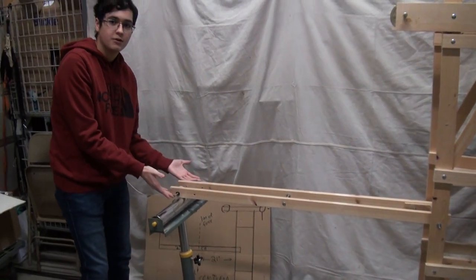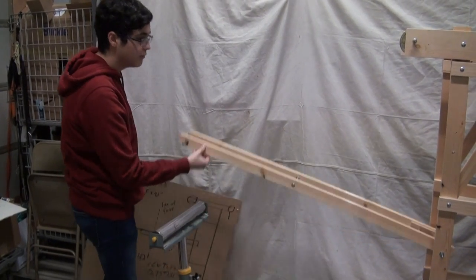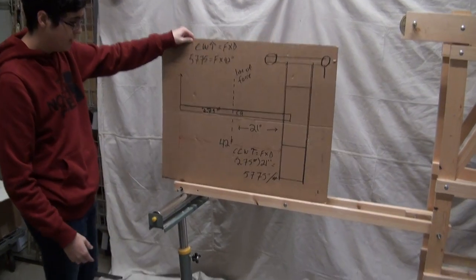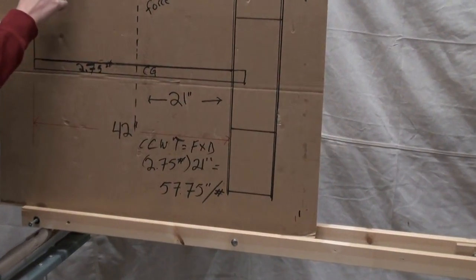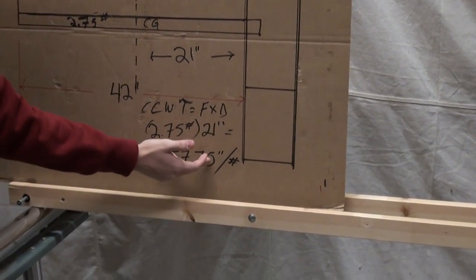Because this is stationary, that means there's an equal force going the opposite way. Equal torque, yes. So how much torque is counterclockwise? Because they have to be equal, the clockwise torque has to equal the counterclockwise torque of 57.75 inch pounds.